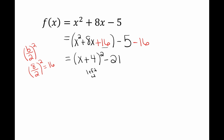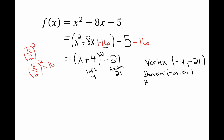I put 16 inside the parentheses and put the opposite, minus 16, on the outside. Then I factor: take the square root of the first, put the sign of the middle, then the square root of 16 which is 4. I regroup the numbers at the end: negative 5 minus 16 is minus 21. Now I can say my parabola goes to the left 4 and down 21. My vertex is negative 4, negative 21. My domain is negative infinity to infinity.